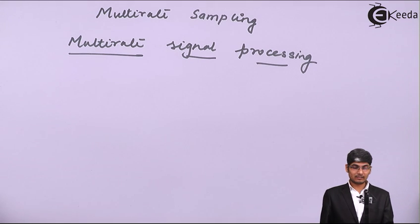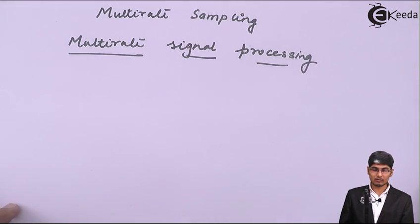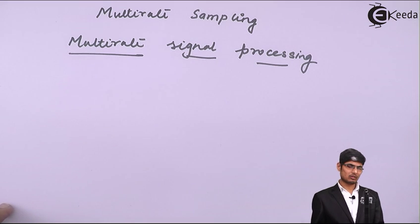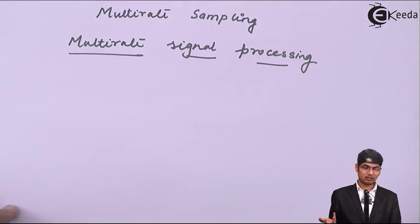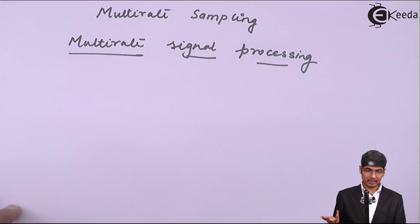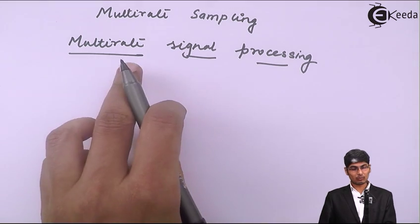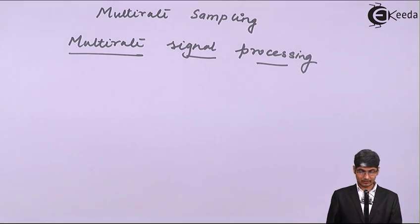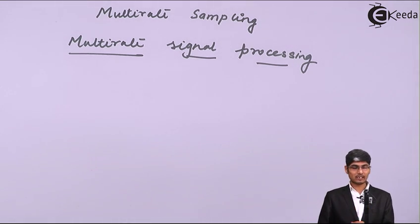First of all, let us understand the meaning of the topic. We are saying something called multi-rate — now what do we mean by multi-rate, and what rate are we talking about? We need to actually specify what this rate is. So before going any further into this topic, let us first understand the meaning of the name itself: multi-rate signal processing.